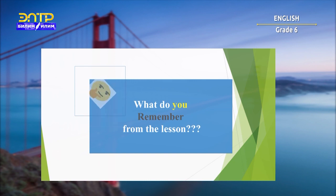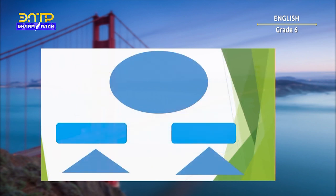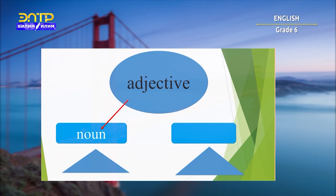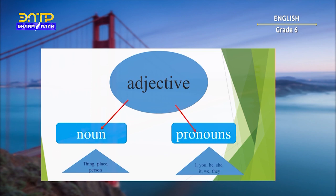And now, dear girls and boys, let's check what you remember from the lesson. What is an adjective? An adjective gives more information about something. An adjective generally describes a noun — a person, a thing, or a place. An adjective also describes pronouns: I, he, she, it, we, you, they.